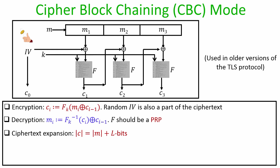The overall ciphertext size is the same number of blocks as the message plus one additional block for the IV — minimal ciphertext expansion, significantly better than the PRF-based CPA secure scheme from the last lecture. However, a drawback is that CBC does not support parallelism: encryption of the second block can only happen after the first, due to the chaining dependency.